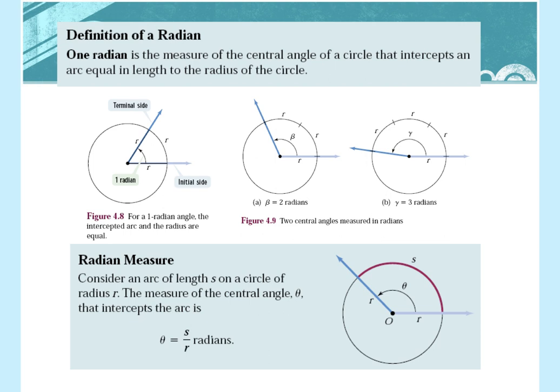A radian is a unit of measurement we're going to use instead of degrees, and we'll learn how to go back and forth between the two. It's defined as the measure of the central angle of a circle that intercepts an arc equal in length to the radius of the circle. It's just a measurement you can use to define an angle. So where we use 30 degrees, we can also use pi over six — pi over six is the radian measure of 30 degrees.